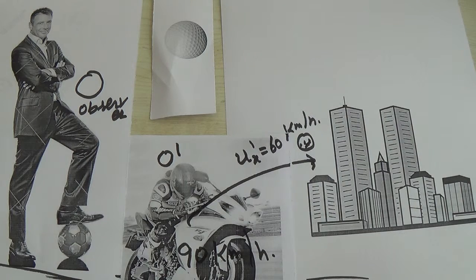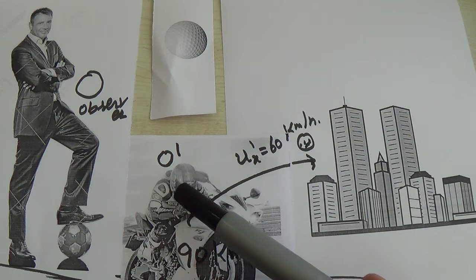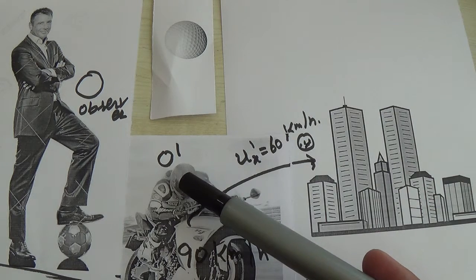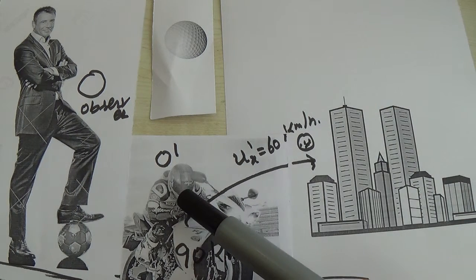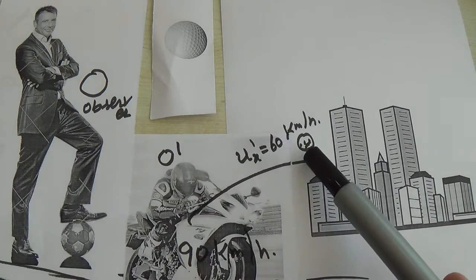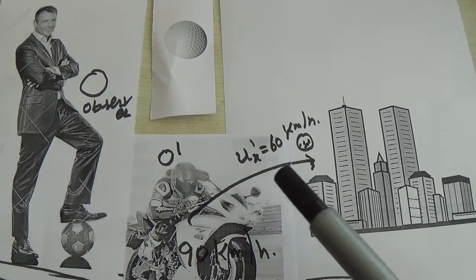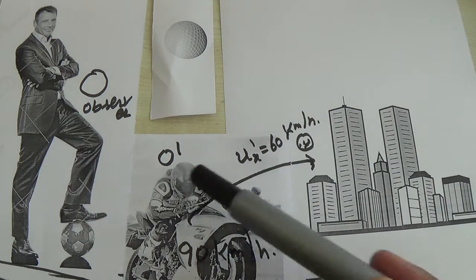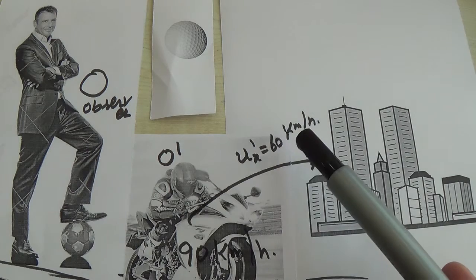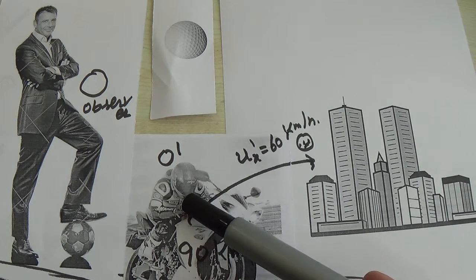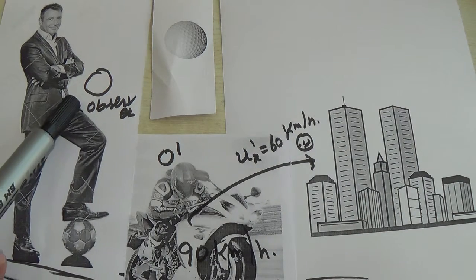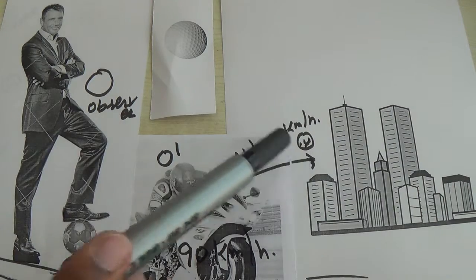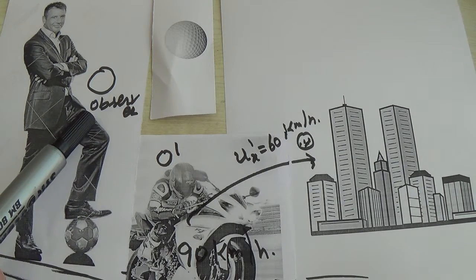So the point is that there is a moving frame — that is the bike — and the observer in it is O prime. The person standing in the rest frame is observer O. The O prime observer throws a ball towards the building and knows the speed of that ball in his frame of reference, which is 60 km per hour. One has to find out the speed of this ball relative to observer O.